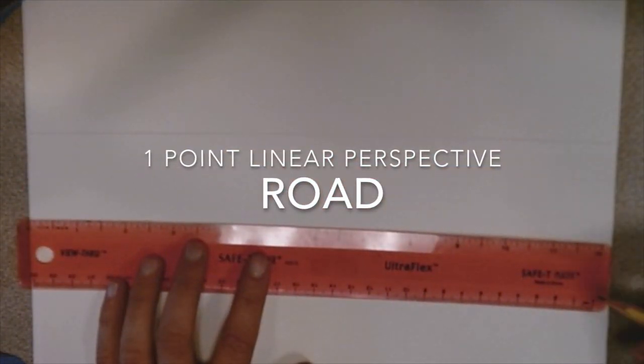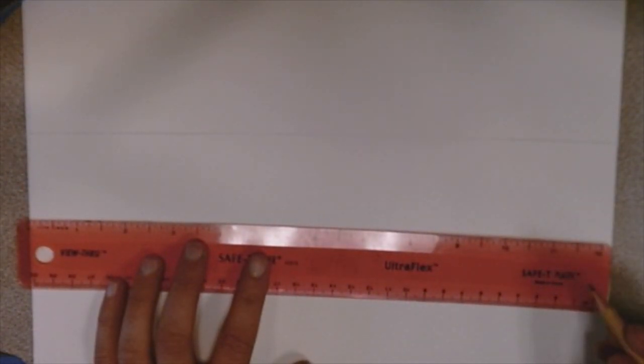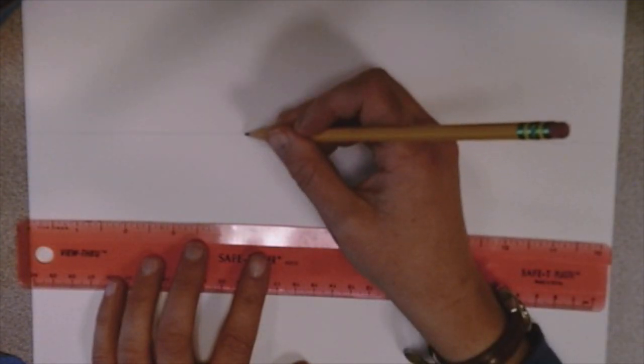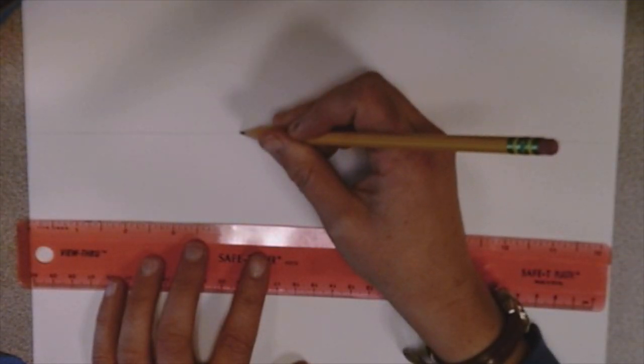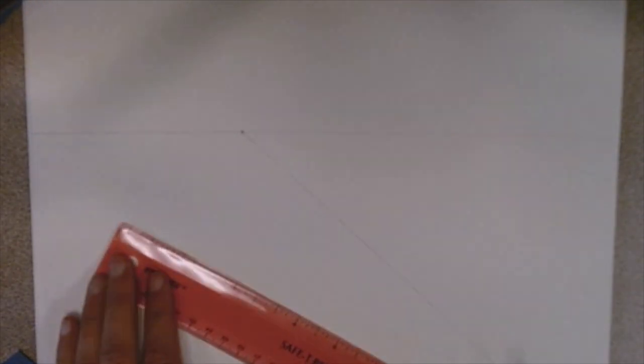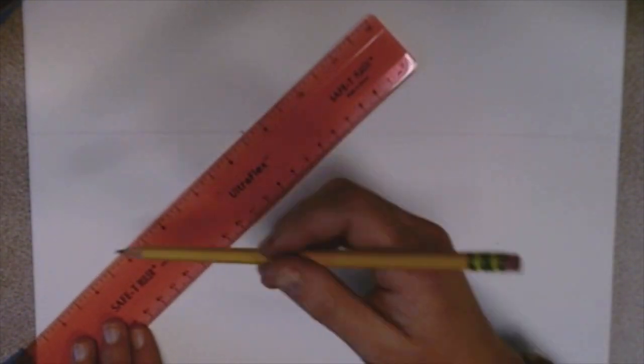Okay, so you're starting with the horizon line and a vanishing point. You're placing that vanishing point slightly to the left, so not quite in the middle, but to the left of the middle there, and you're drawing two lines radiating out from that point.